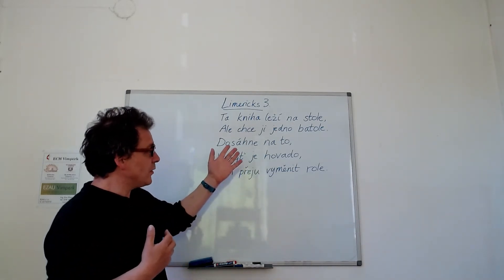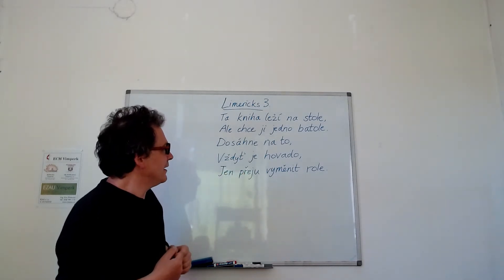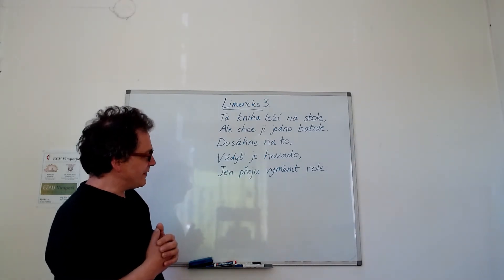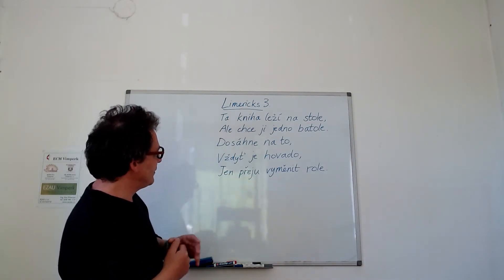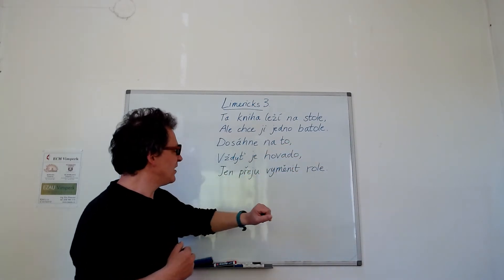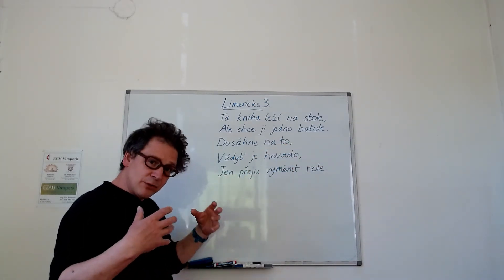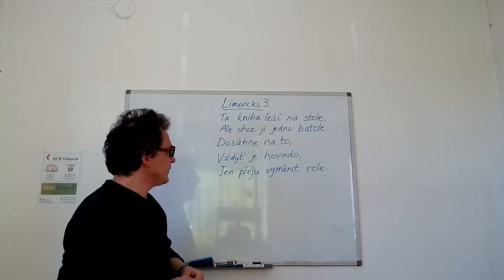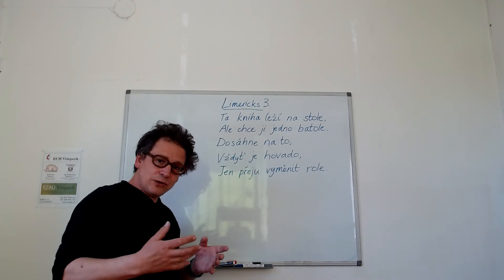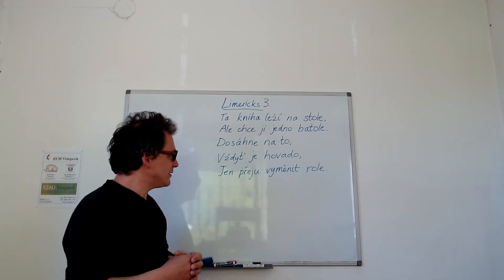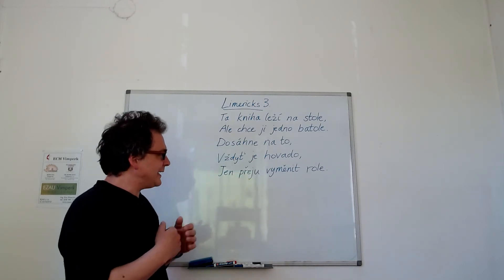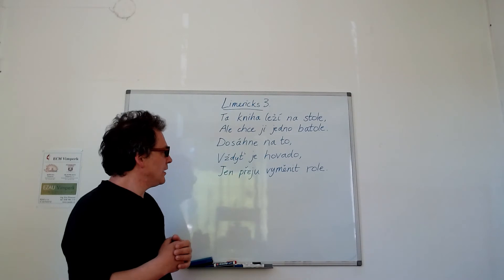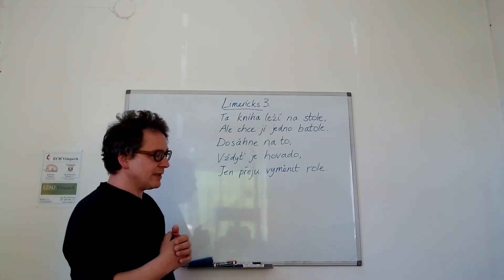Here we have one of my Czech limericks that went wrong. What went wrong was this word. I misunderstood the meaning of that. I was really trying to say that the toddler — we would call a patole — was like kind of a little monster, and he would succeed in getting the book off the table even though he's down there. I found the word hovedo and it looked like it meant monster in that way to me, so I made this. I read it to my wife and she said no, it just doesn't work. It has a different meaning and she explained it to me. So now I have a Czech limerick that doesn't really work.